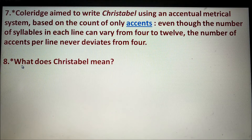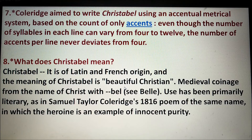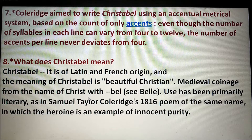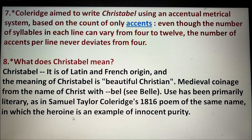Number eight: Christabel is of Latin and French origin, and the meaning of Christabel is 'beautiful Christian.' The medieval coinage is from the name of Christ with bell — Christ plus bell equals Christabel. Its use has been primarily literary, as in Samuel Taylor Coleridge's 1816 poem of the same name, in which the heroine is an example of innocent purity. Christ is the symbol of innocence and purity, so the character Christabel is the embodiment of innocence and purity.